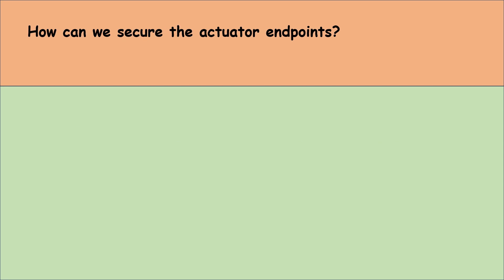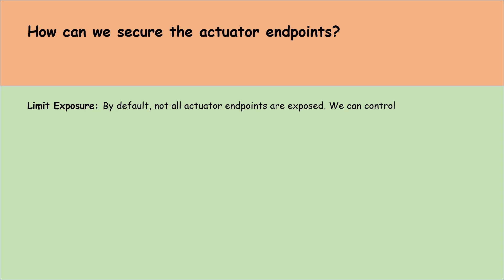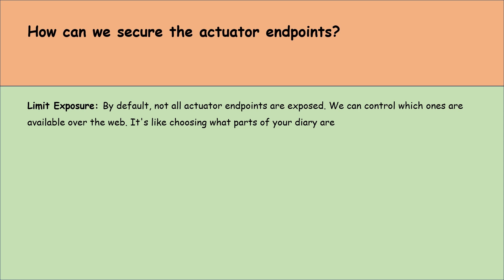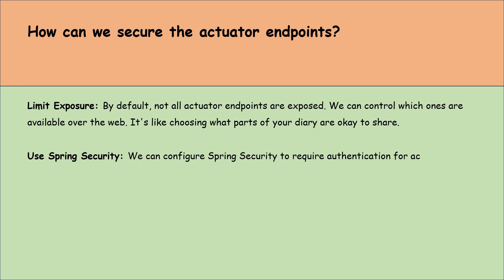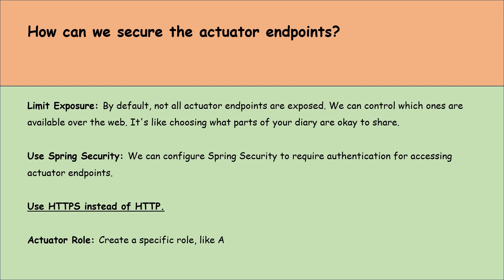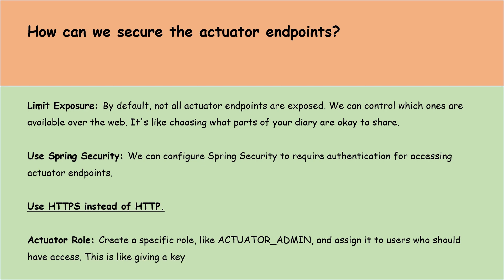How can we secure the actuator endpoints? There are a few ways. First, limit exposure — by default, not all actuator endpoints are exposed, and we can control which ones are available over the web. Second, use Spring Security — configure it to require authentication for accessing actuator endpoints. Third, use HTTPS instead of HTTP, since HTTPS provides more security. Fourth, define an actuator role — create a specific role like 'actuator-admin' and assign it only to users who should have access, like giving a key only to trusted people.